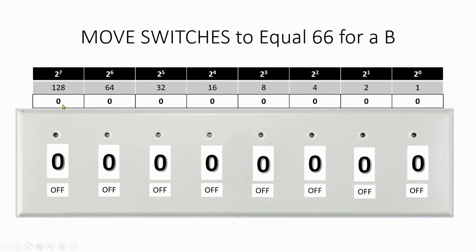128 is more than 66, so we're going to leave that switch off. Let's move to the next switch. This one is 64. Since this switch is less than 66, we go ahead and turn that on. As we turn that on, that gets a value of 64. And we'll keep moving down the line to see, do we turn on the next switch?